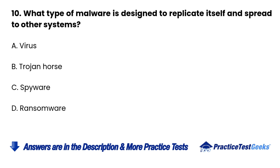Question 10: What type of malware is designed to replicate itself and spread to other systems? A. Virus. B. Trojan horse. C. Spyware. D. Ransomware.